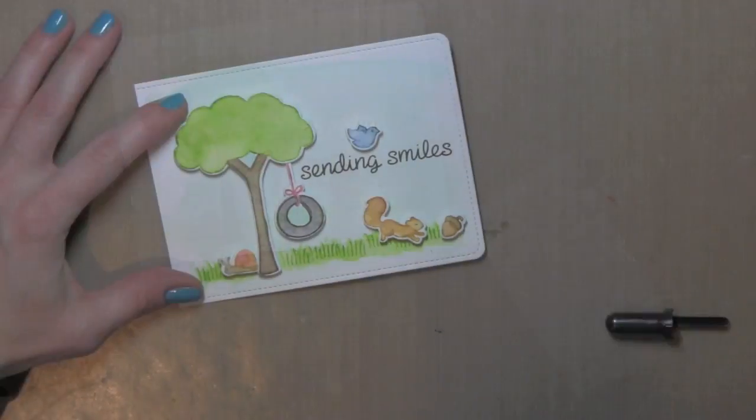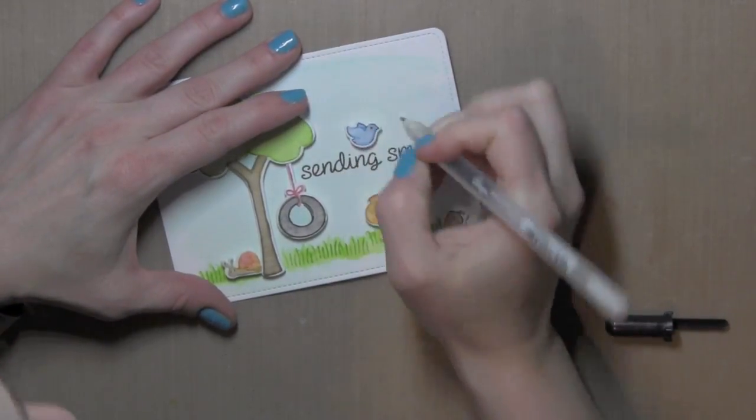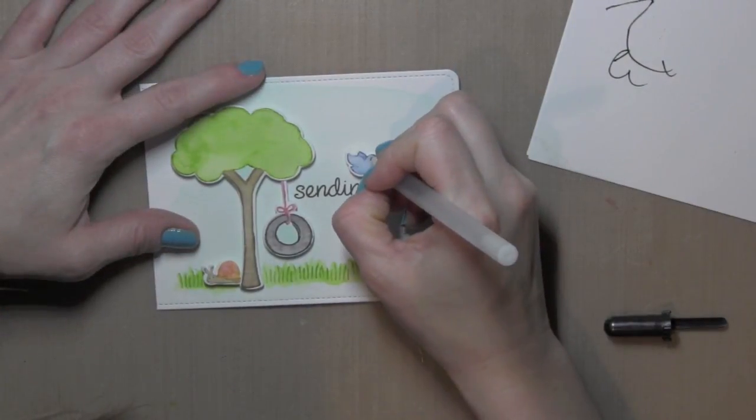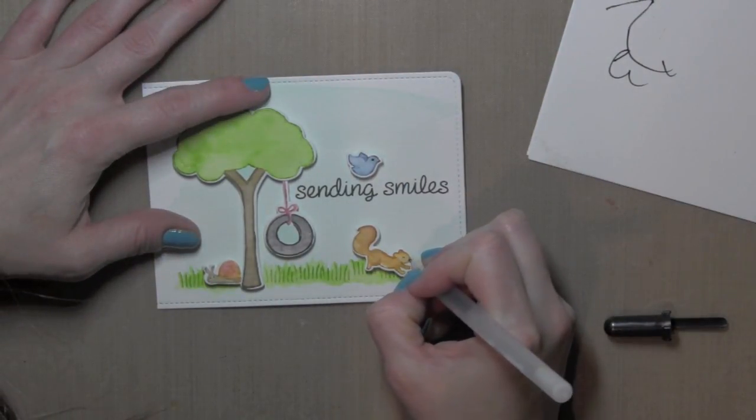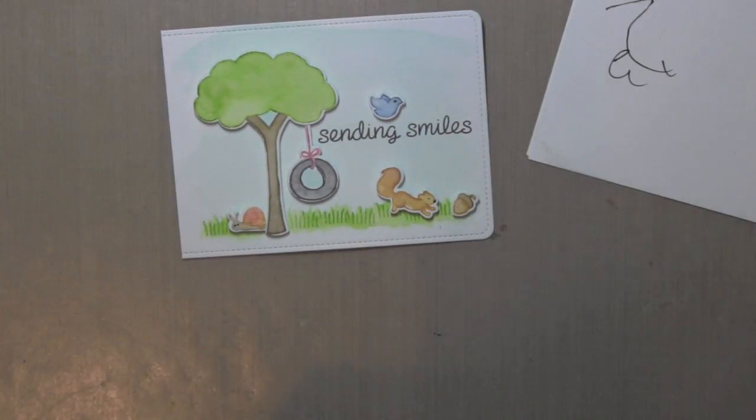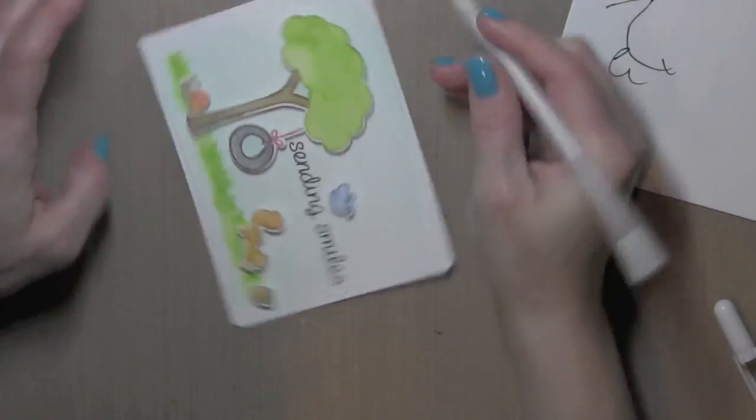And I'm ready to add those finishing details. I'm going to use the black glaze pen from Sakura for the eye on the bird, the nose on the squirrel, and also the eyes on the snail. Just helps give some definition to those.